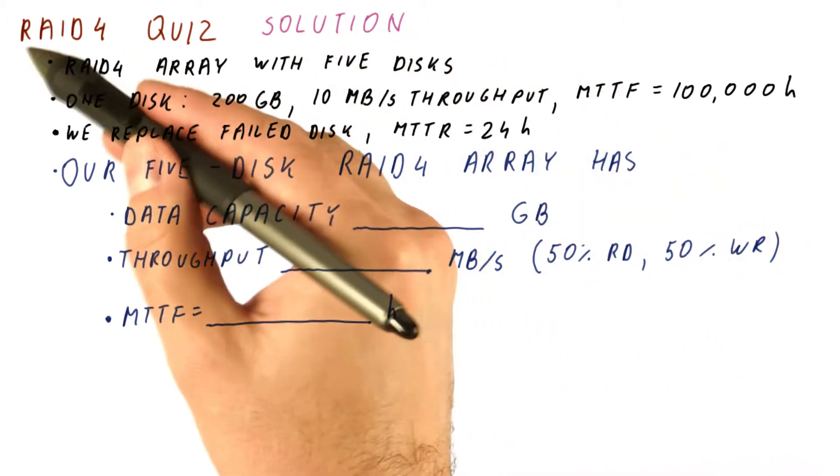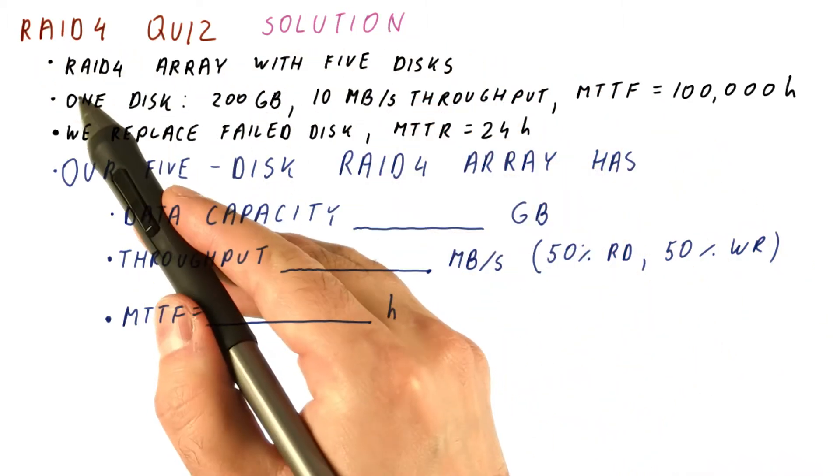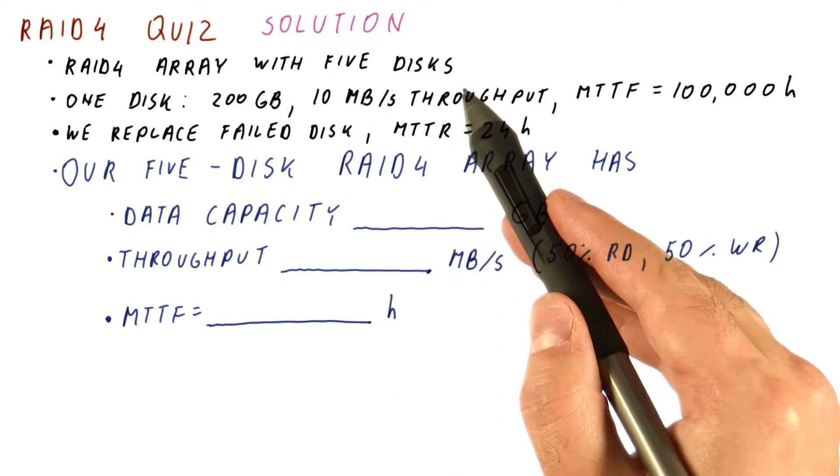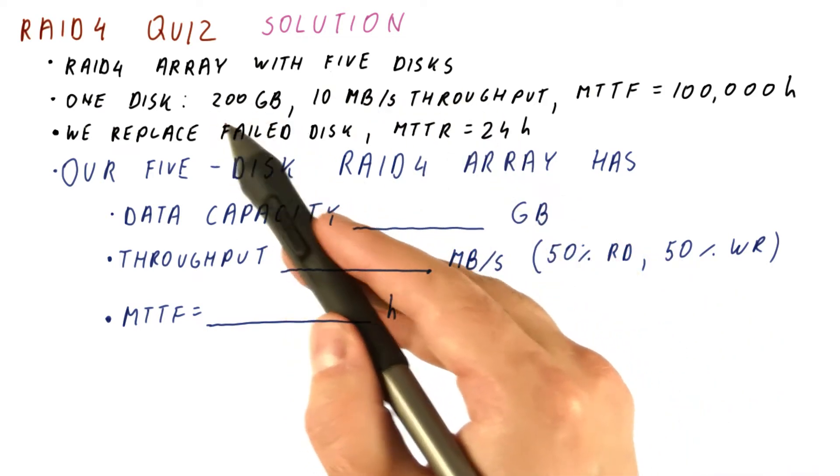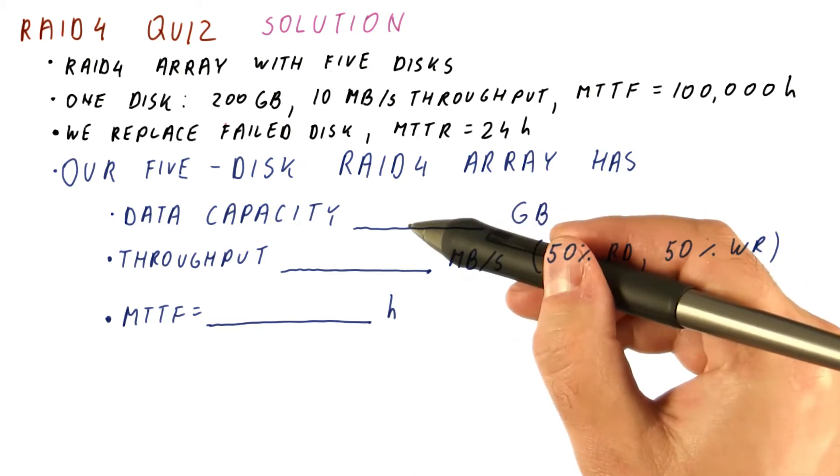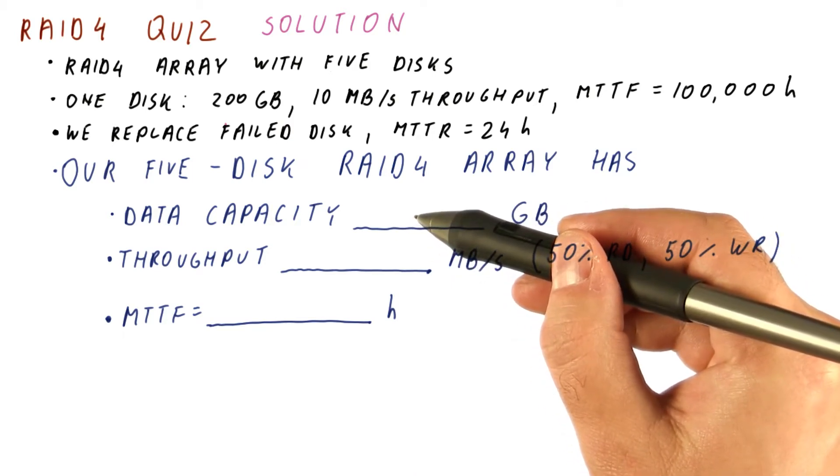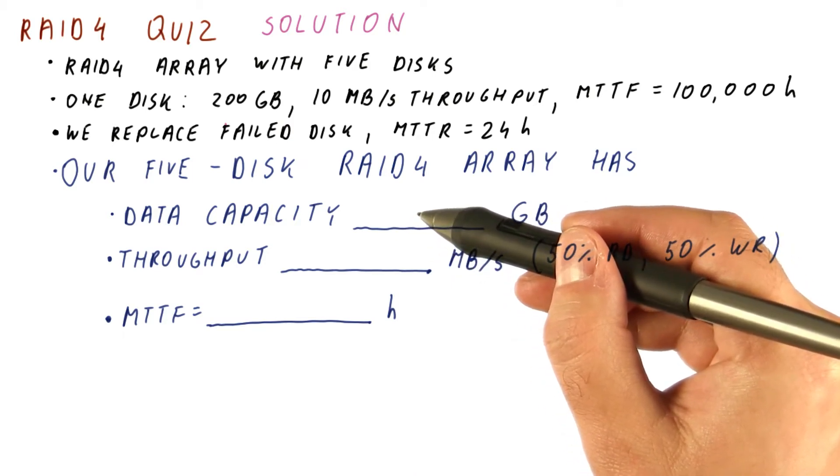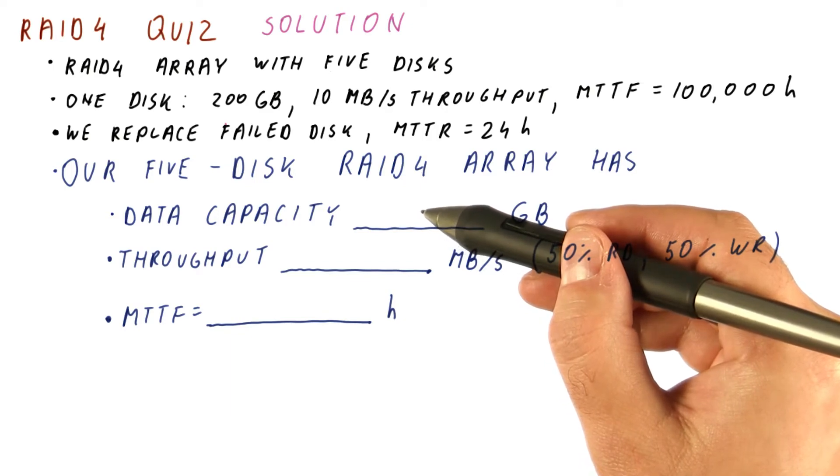Let's look at the solution to a RAID 4 quiz. We have a RAID 4 array with five disks, and one disk has 200 gigabytes in capacity. The data capacity of the array is the data capacity of all but one disk, because we sacrifice a single disk to parity.